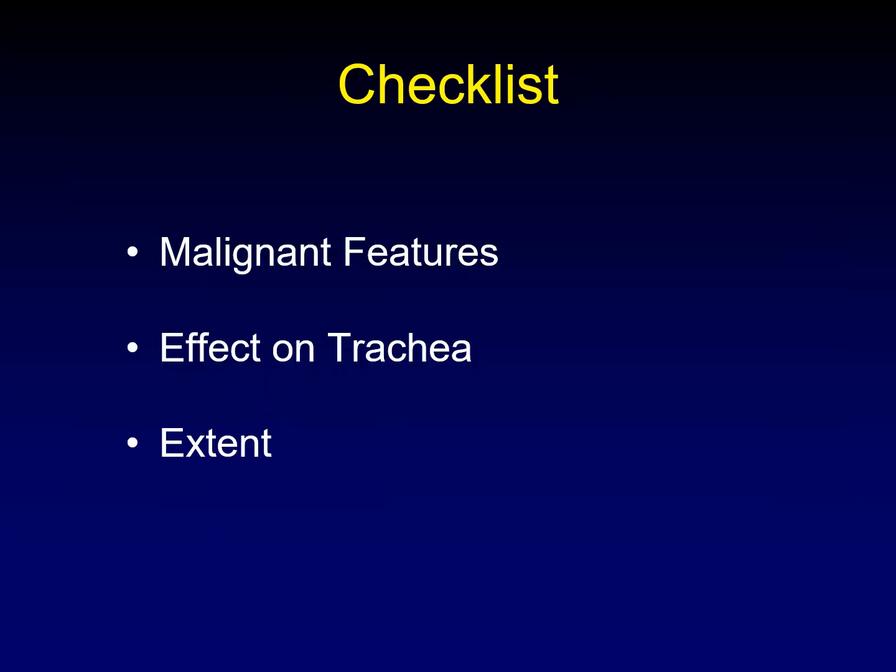Going back to our checklist, the things we're going to address on a preoperative CT of a thyroid mass are: malignant features; the effect of the mass on the trachea — compression and displacement; and the extent of the mass — superior, inferior, and retropharyngeal. If you run through those things, you'll help your surgeon be well prepared for the coming surgery.